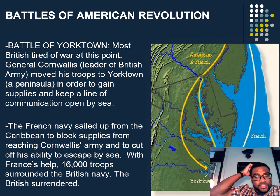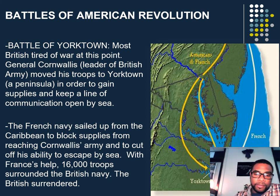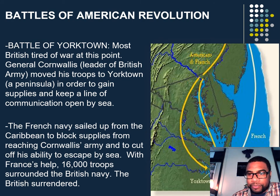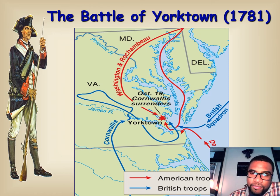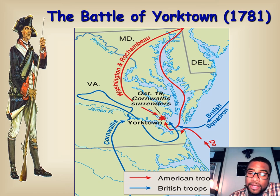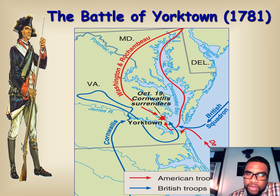With France's help, 16,000 troops surrounded the British, and the British ended up surrendering. Here is another map of the Battle of Yorktown. As you can see, Washington is coming from the north down to the south, and Yorktown is that town just to the left of the tip of that peninsula in the Chesapeake Bay.